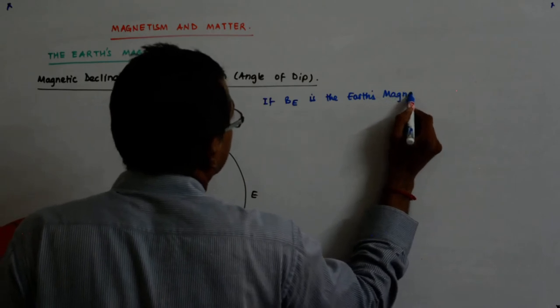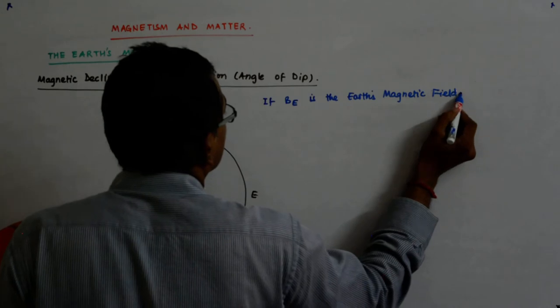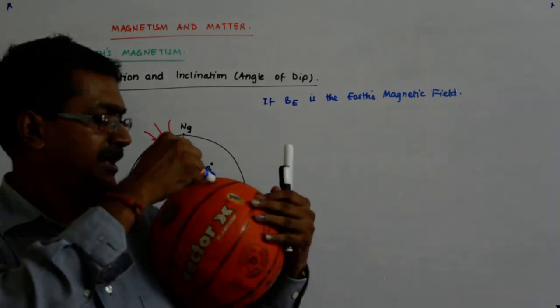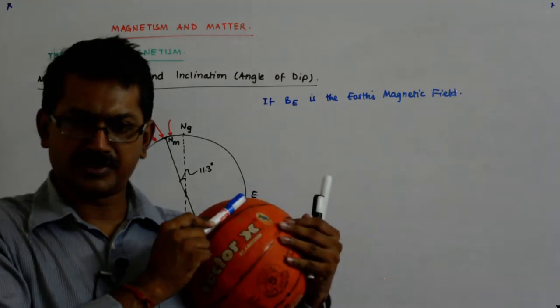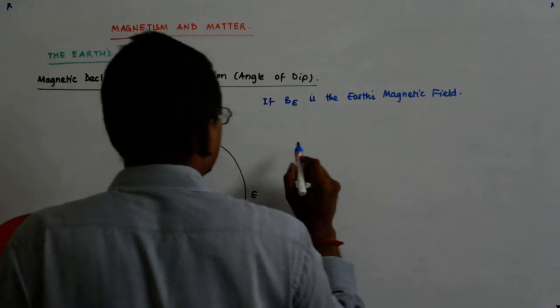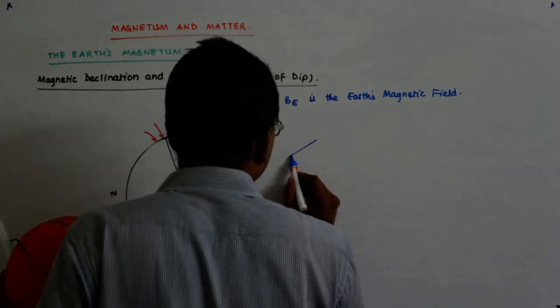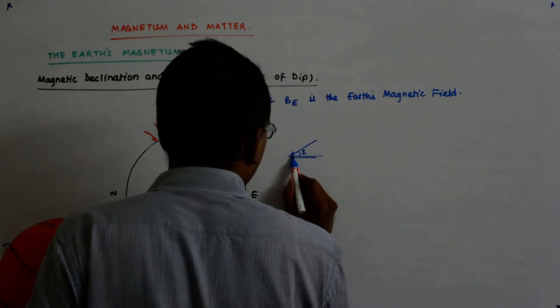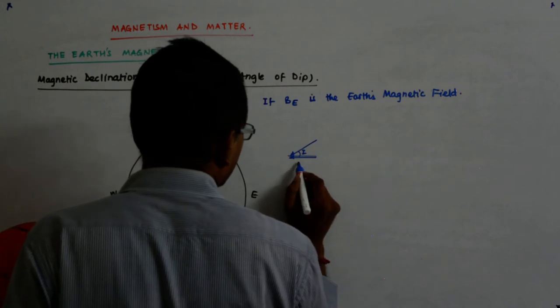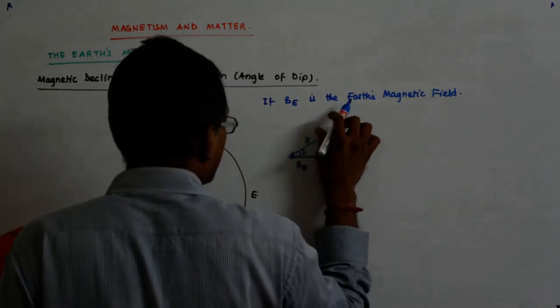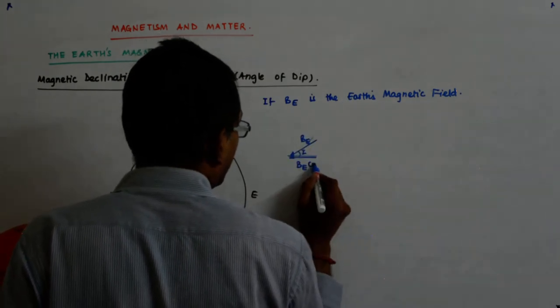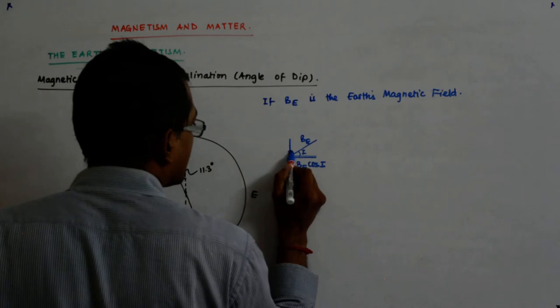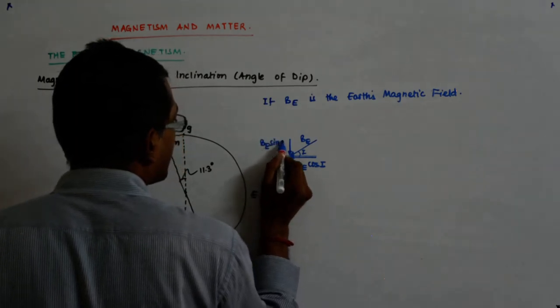Then B_E cos I will be this component, the horizontal component. It is like this, and this is the horizontal. This makes an angle I with this. So if I take this, this is B, this is B, this is B_E. So B_E cos I is this.